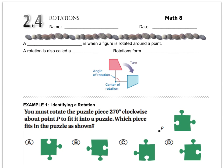In this lesson, we talk about rotations. A rotation is when a figure is rotated around a point. The only other word to use is the slang term, which is called a turn. Rotations also form congruent figures.